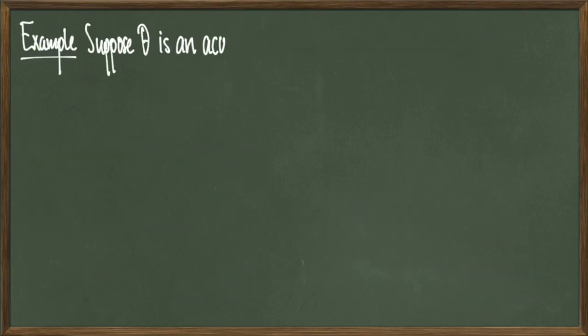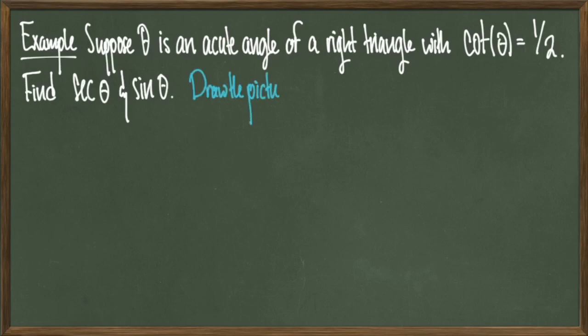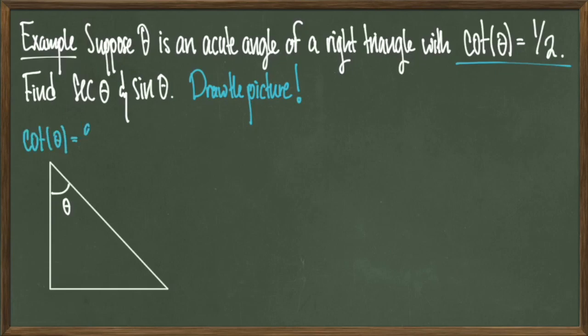For our next example, suppose that theta is an acute angle of a right triangle such that cotangent of theta is equal to 1 half. We want to find secant theta and sine of theta. The first thing that we should do is draw the picture and try to sketch out what this triangle could look like.